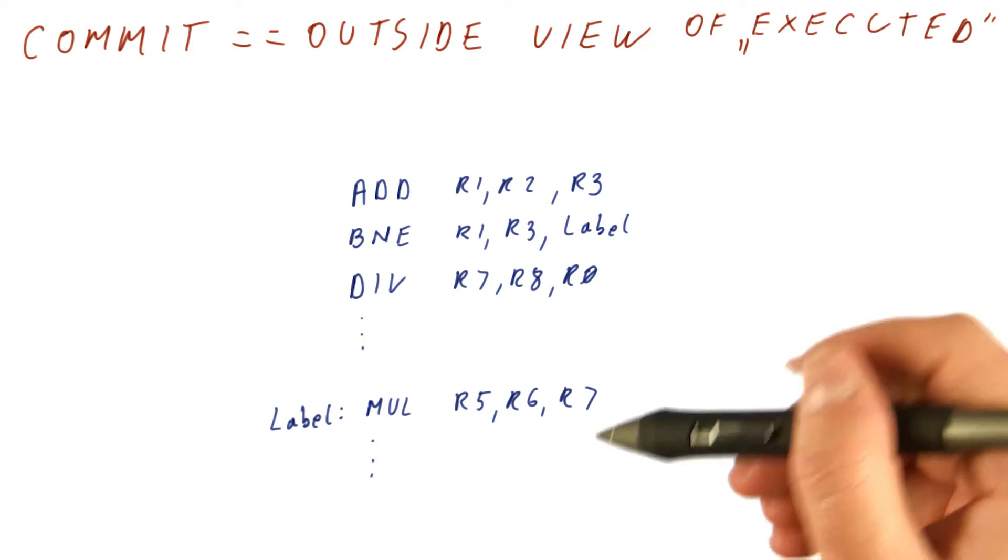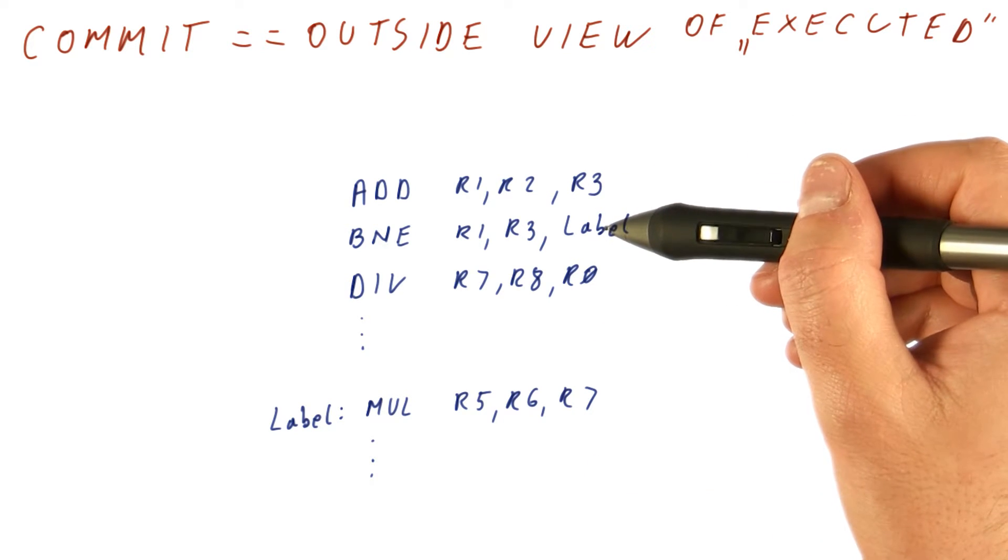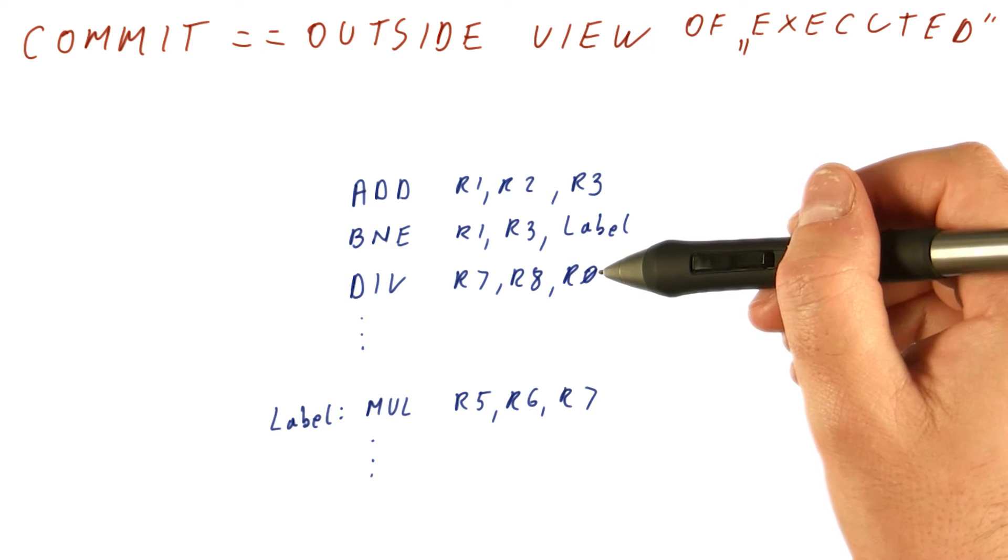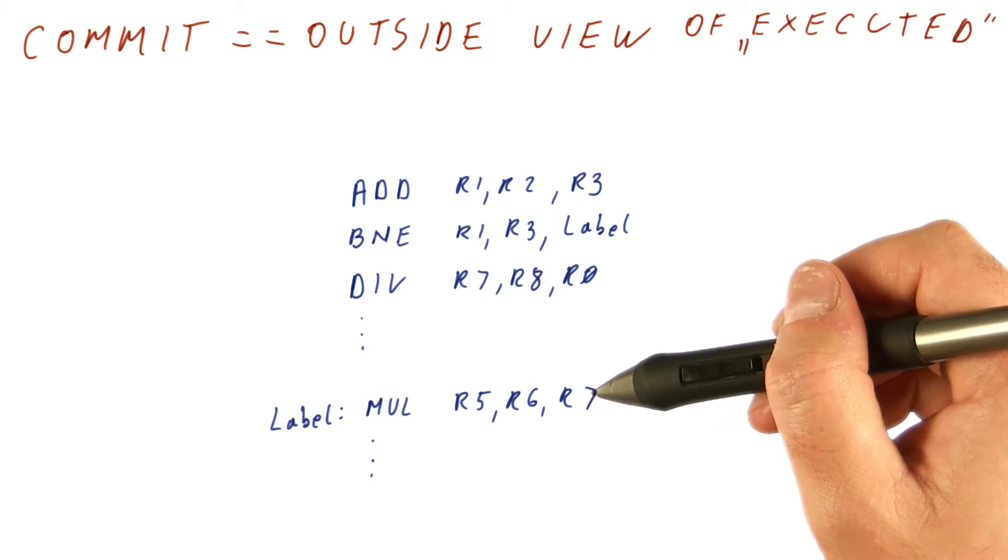So let's consider the example of this program here where we do an add and then we should branch to the label, but instead we mispredicted and go to a divide and we really should have executed this multiply.